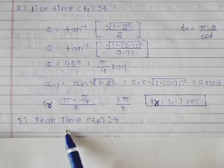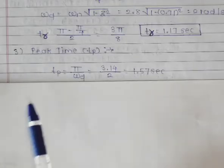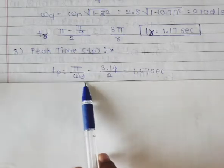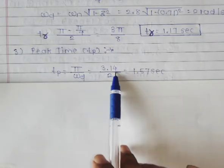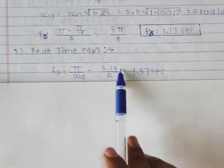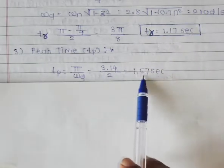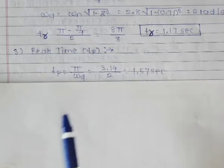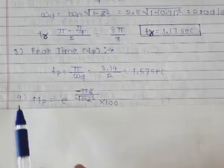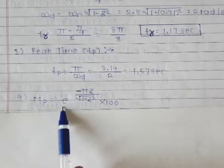Next, find the peak time tp. The formula for peak time is tp = π/ωd. We already found ωd previously. So tp = 3.14/2, which gives tp = 1.57 seconds.